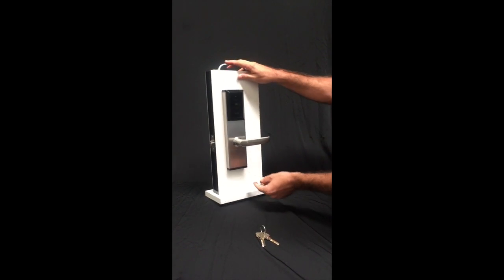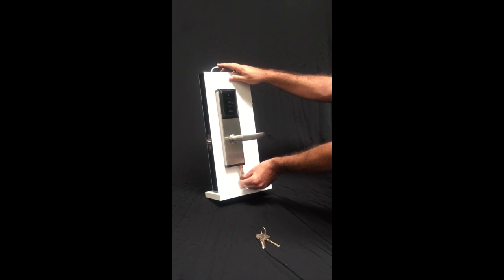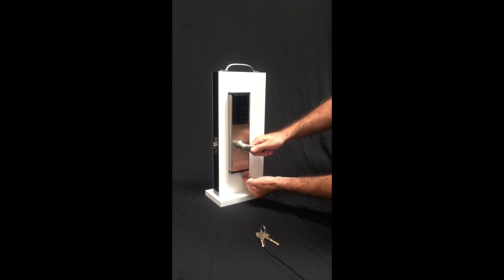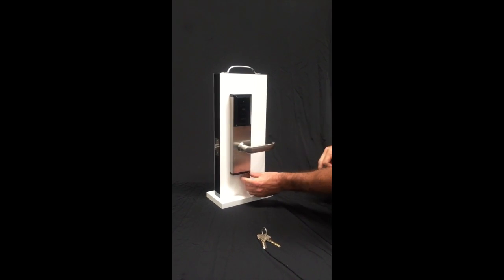If you use the wrong set of keys and insert it in the cylinder at the bottom, you will not be able to fully press the key inside the cylinder. When you rotate the handle, the latch will not go inside.